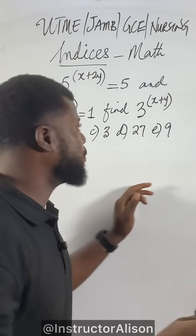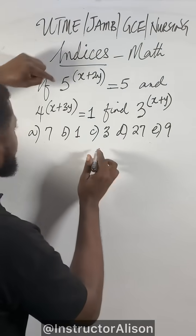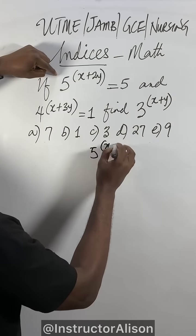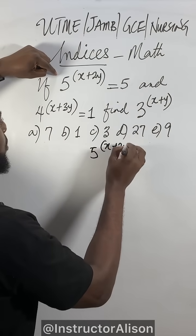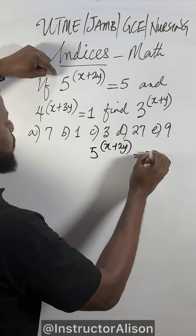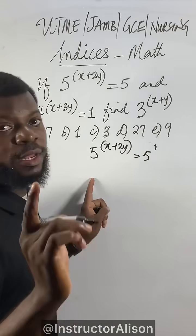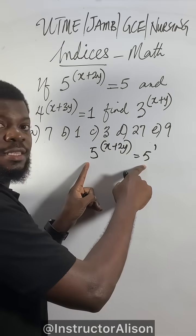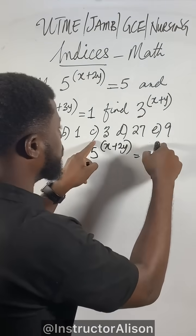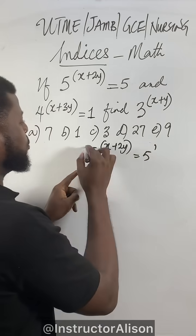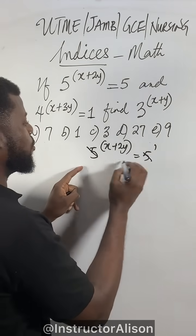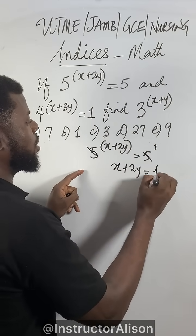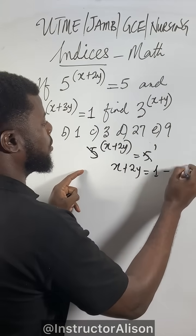My friends, let me solve this question. Let's say we get 5 to the power of x plus 2y equal to 5. This 5, if you put it to the power of 1, any time the base is the same, we equate the powers. So x plus 2y equal to 1. Equation 1.